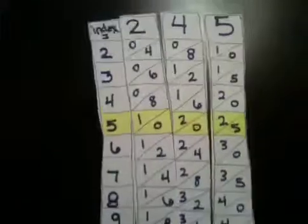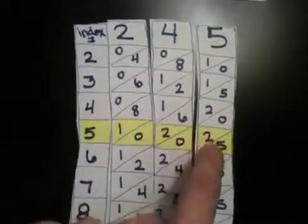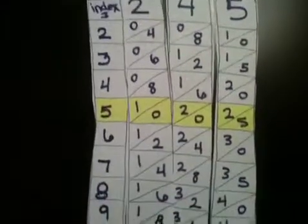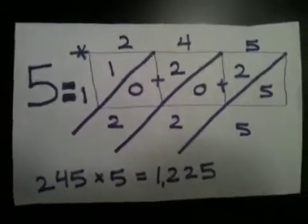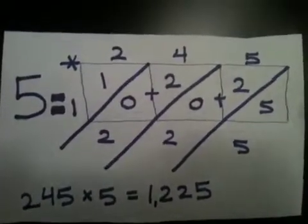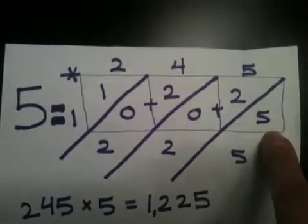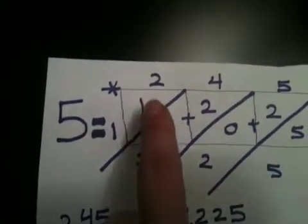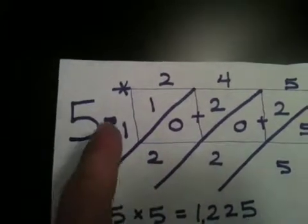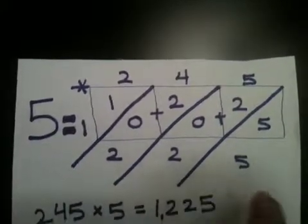I highlighted 5 times 2, 5 times 4, and 5 times 5. What we're going to do is add all of those numbers together and you'll have your answer. So: 5 plus 0 is 5, 2 plus 0 is 2, 2 plus 0 is 2, and 1 plus 0 is 1. Reading from left to right, 5 times 245 equals 1,225.